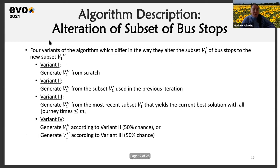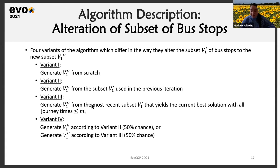We have four different variants of the algorithm, which differ in how they alter the subset V1 prime of bus stops. Variant one generates a new subset from scratch. Variant two generates a new subset from the subset used in the previous iteration. Variant three generates a new subset from the most recent V1 prime that yields the current best solution. Variant four uses a trade-off between variants two and three: if a random number is less than 0.5, it uses variant two; otherwise variant three. We have compared these four variants, and I will present the results in the computational experiments section.